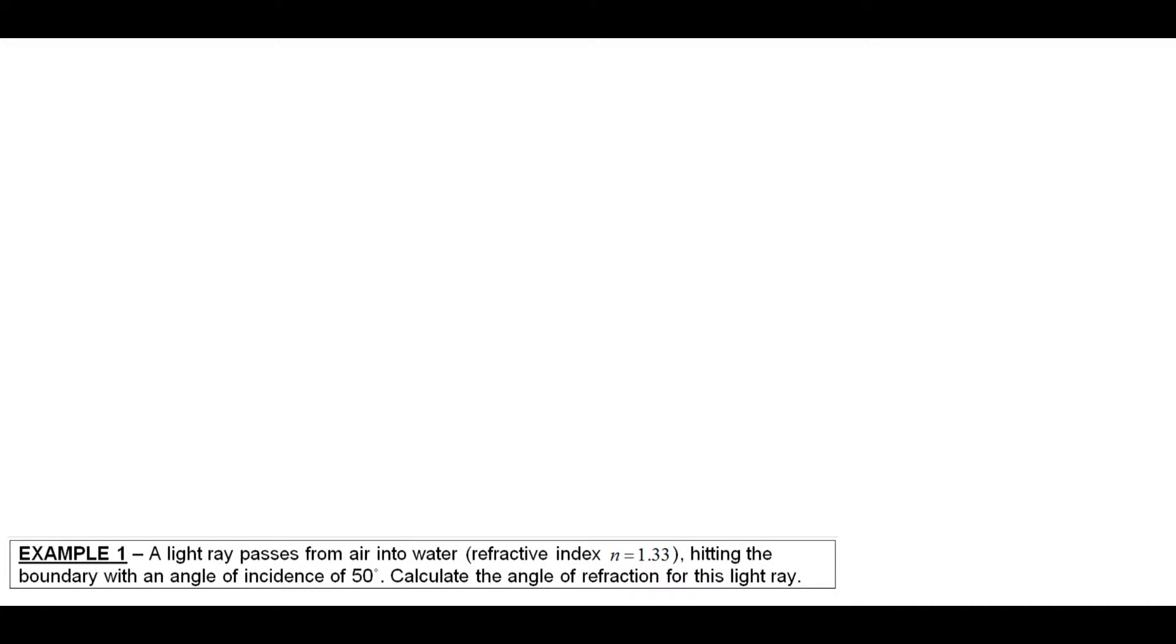Okay, so here's our first example. Now what we're trying to do here is we're looking at a light ray that's passing from air into water, which has a refractive index of 1.33. And it hits that boundary between those two materials with an angle of incidence of 50 degrees. Now given that, we're going to try and calculate the angle of refraction as that ray passes into the water.